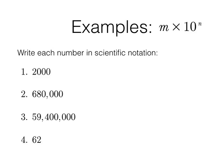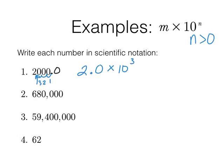Here are examples with numbers bigger than 1, so n will be positive. For 2,000: the original decimal point is at the end. We move it three places to get 2.000, so the answer is 2 times 10 to the 3rd. For 680,000: the decimal point moves to give 6.8, and counting — 1, 2, 3, 4, 5 — gives us 6.8 times 10 to the 5th power.